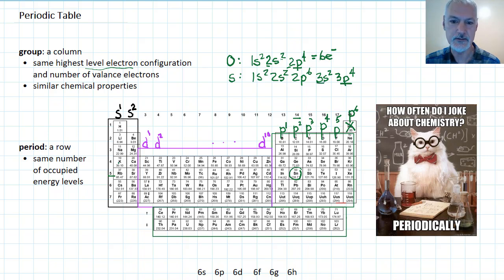Sulfur, its highest energy level being three, again, two plus four. We have six valence electrons. So another feature of elements in the same column is the same number of valence electrons. And these would all have six.